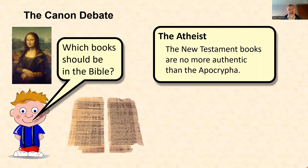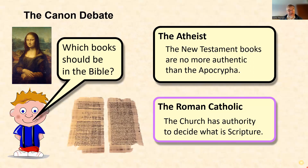The atheist says: you've got all these books, quite different from each other — why should you think your books are any better than the apocryphal ones, which give a totally different picture of Jesus? If the apocryphal ones are wrong, the New Testament ones are probably wrong as well. The Roman Catholic version says: there were lots of books but the church selected some of them, which shows the church has the authority to decide about the Bible — so the church's teaching decides what's in the Bible and you can't use the Bible to supersede the church.